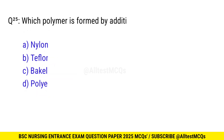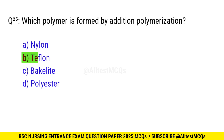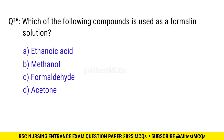Question No. 25: Which polymer is formed by addition polymerization? The correct option is B: Teflon. Question No. 26: Which of the following compound is used as a formalin solution? The right option is C: Formaldehyde.